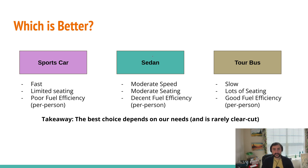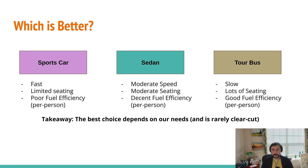And then somewhere in the middle, we have things like a sedan. It has moderate speed, moderate seating — more than a sports car but much less than a tour bus — and it has decent fuel efficiency, at least per person.